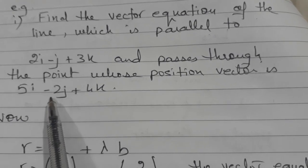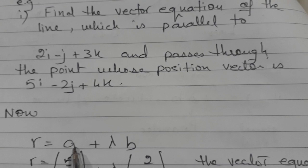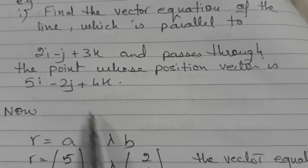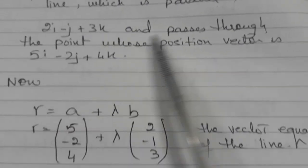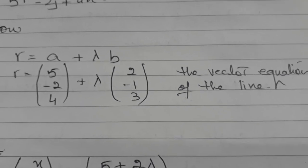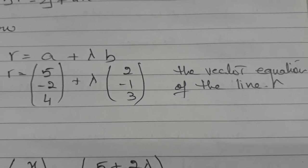This is for any particular point. So you will write 5, minus 2, 4 in place of a. And in place of b, you will write down 2, minus 1 and 3. So this will give you vector equation of the line. Very straightforward question.